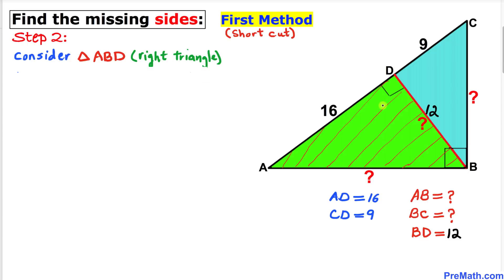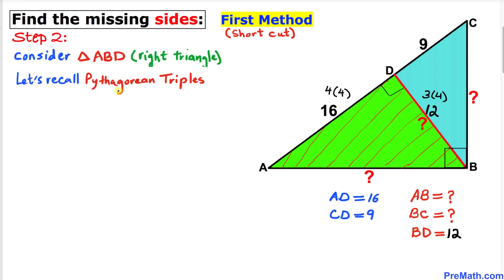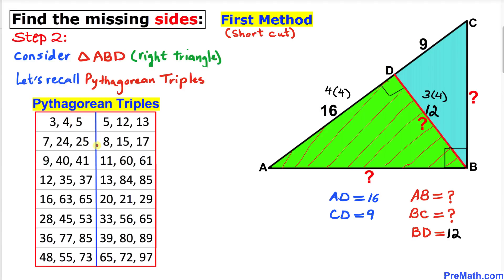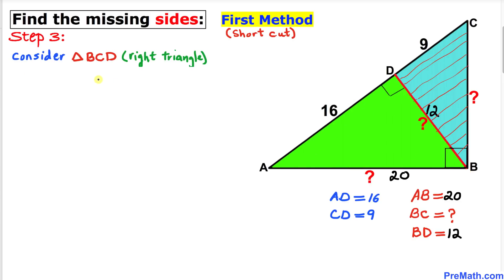Now let's focus on right triangle ABD. We can see that 16 can be written as 4 times 4, and 12 can be written as 3 times 4. Recalling Pythagorean triplets, the 3-4-5 triple works here. Since we have a multiple of 4, we multiply 5 by 4 as well: 5 times 4 gives us 20. So side AB turns out to be 20 units.